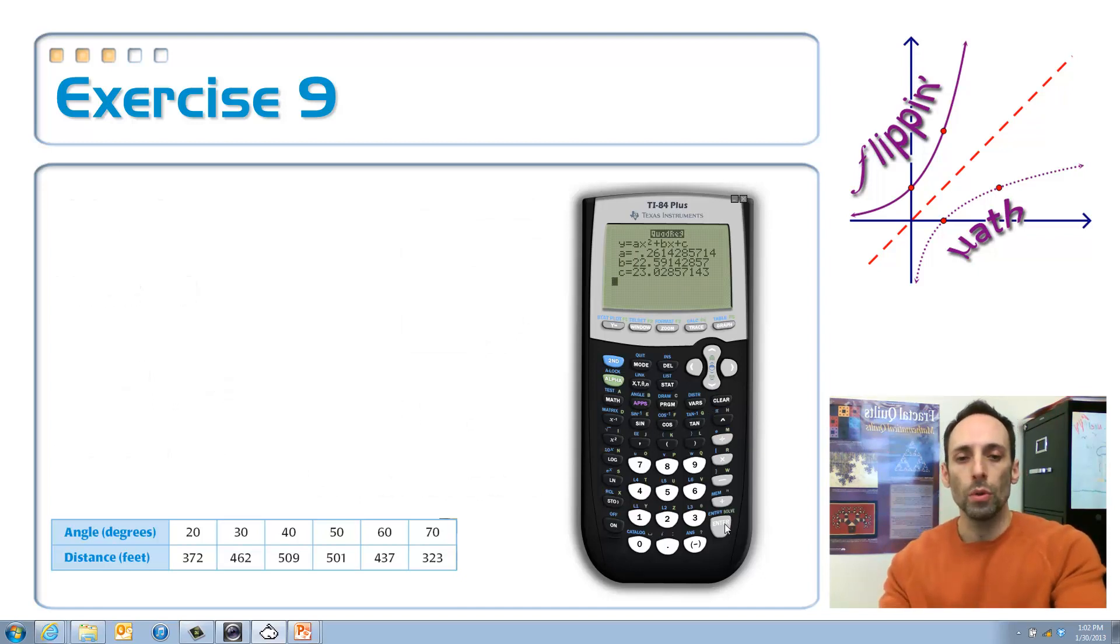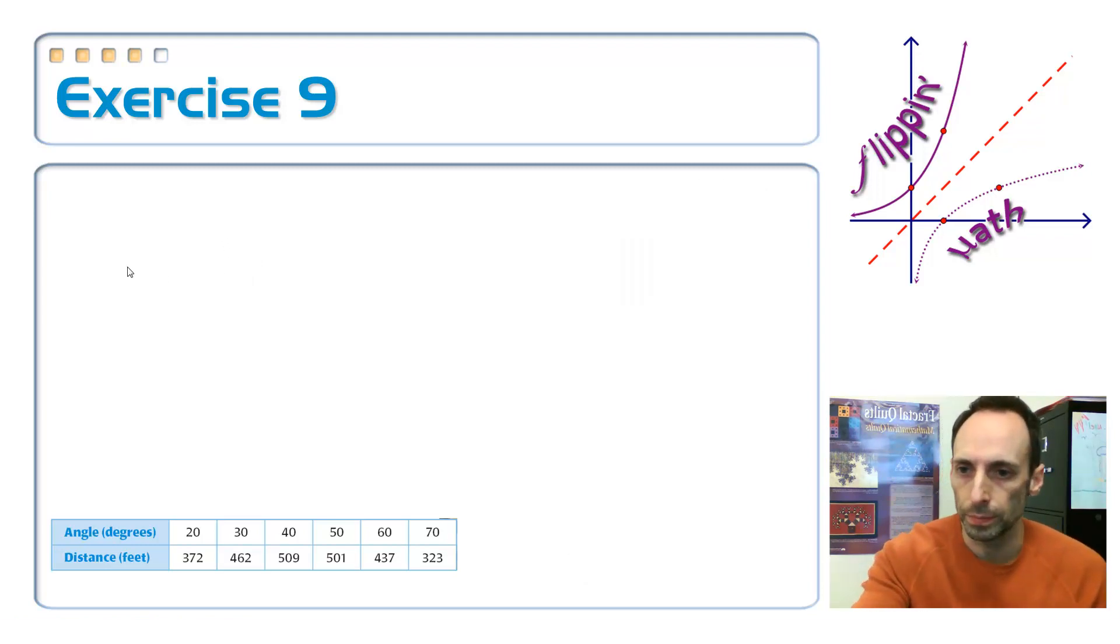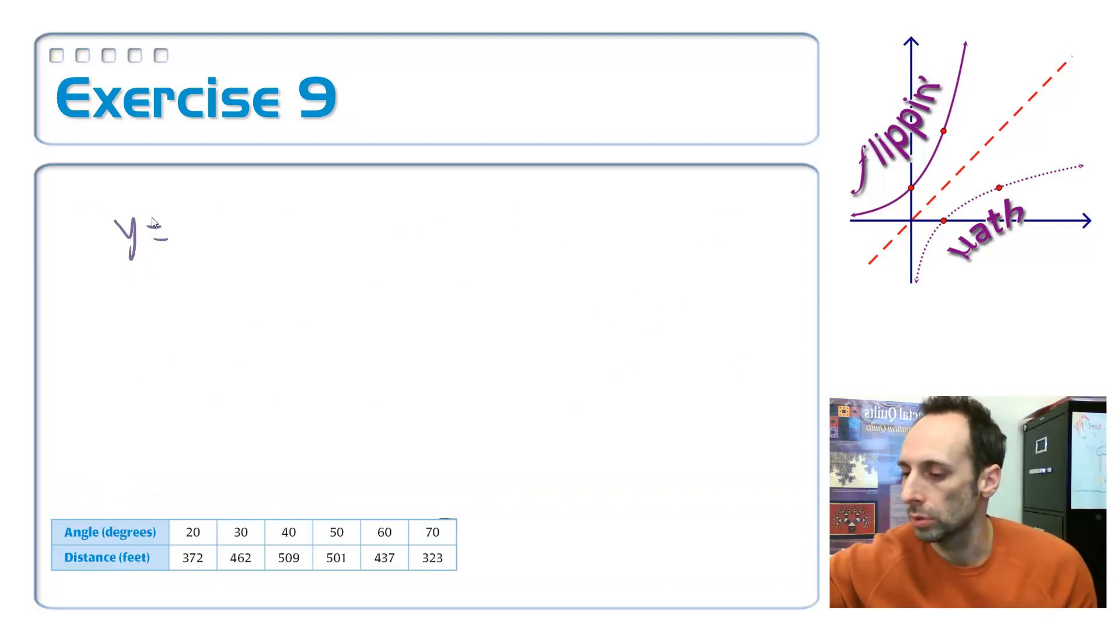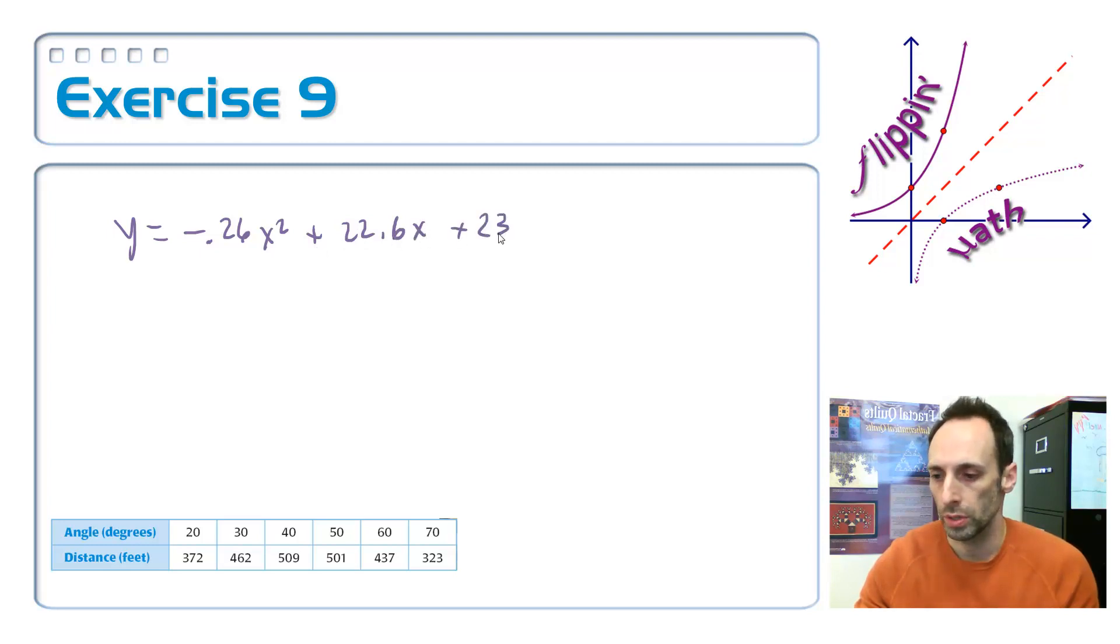So, let's just go ahead and round off our numbers maybe to the nearest tenth place. So, give me a second as I write this down. Y is equal to -0.26X² plus 22.6X plus 23.0.